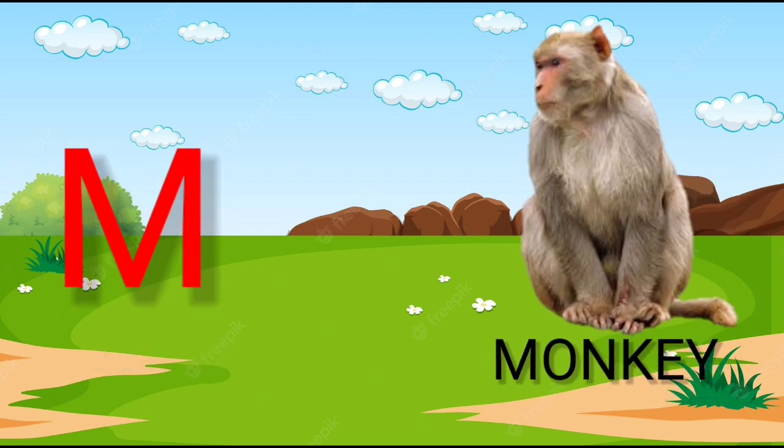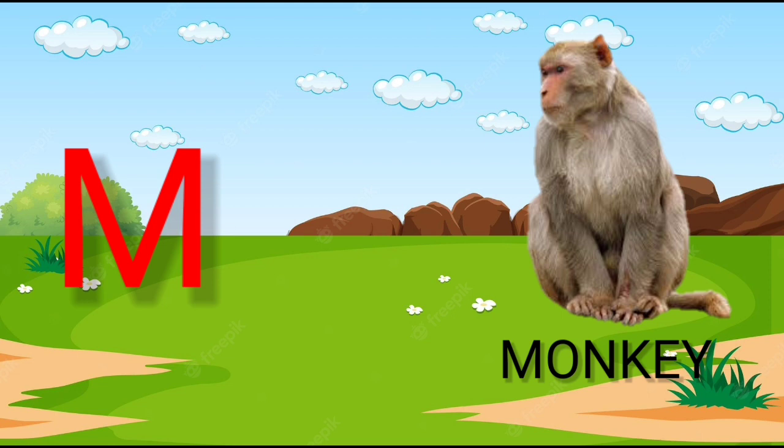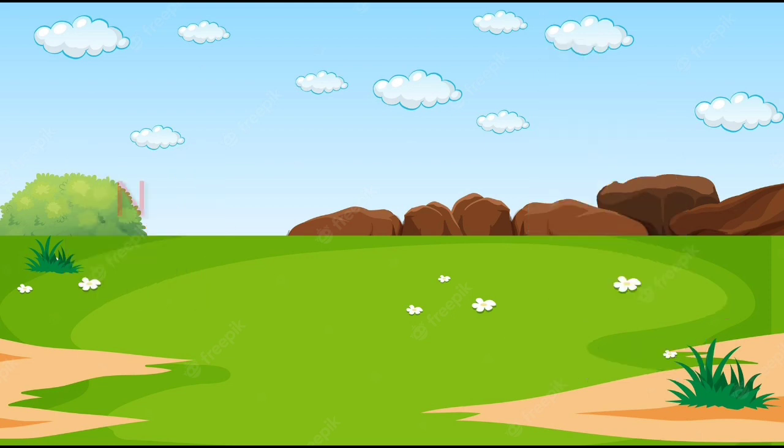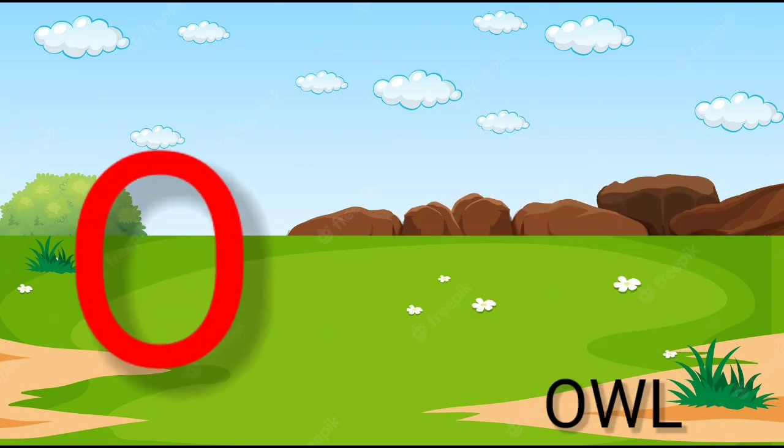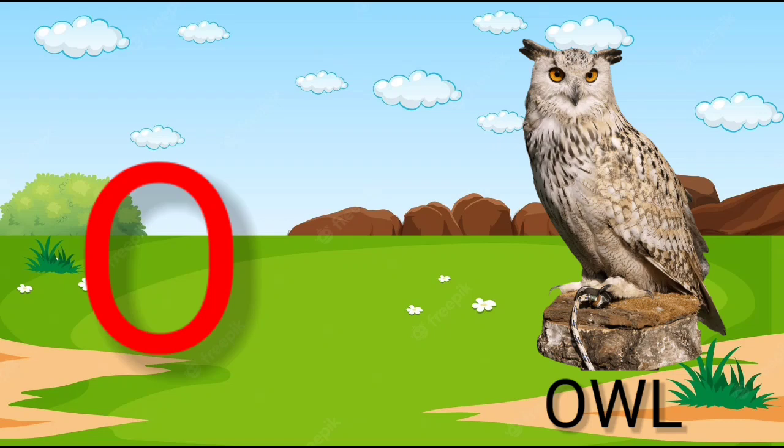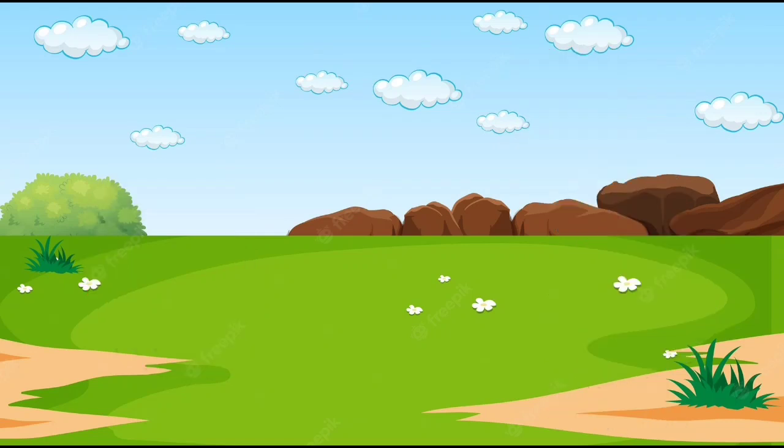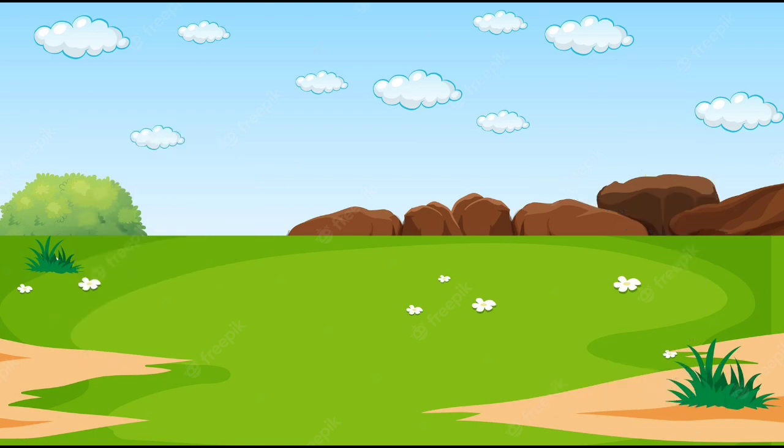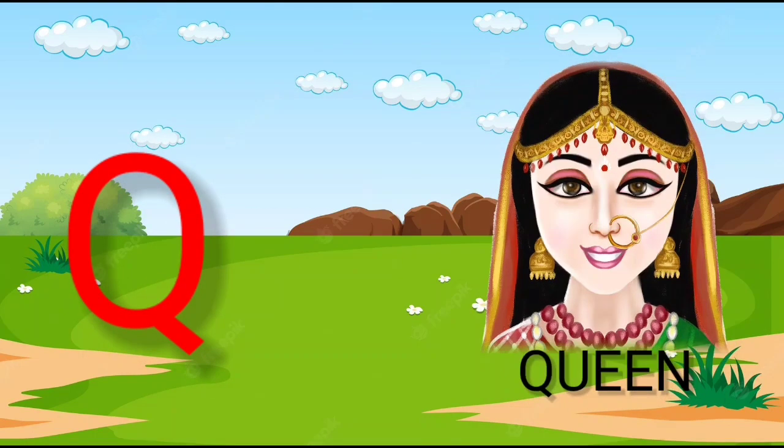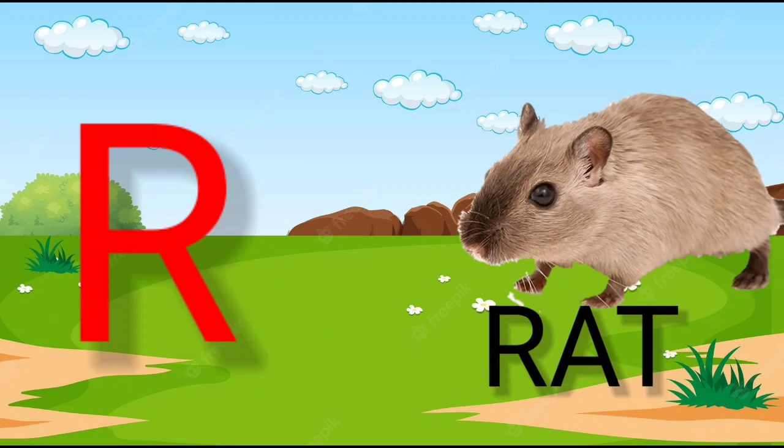M for monkey. N for net. O for owl. P for period. Q for queen. R for right.